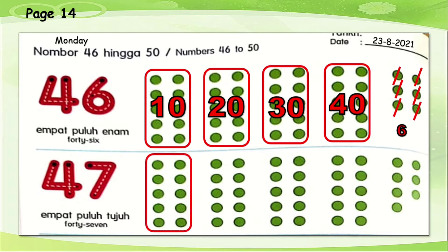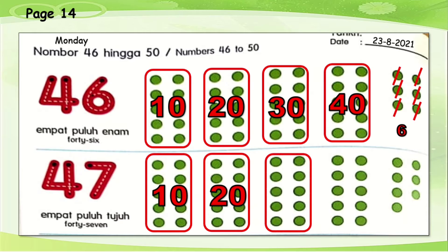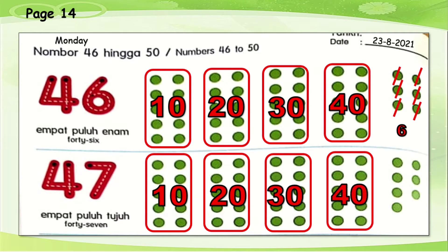Let's count together: 10, 20, 30, 40. And now let's count the balance one by one: 1, 2, 3, 4, 5, 6, 7. Very good. So as teacher told you, 40 and 7 together will be 47.